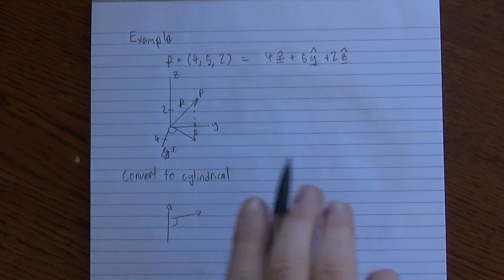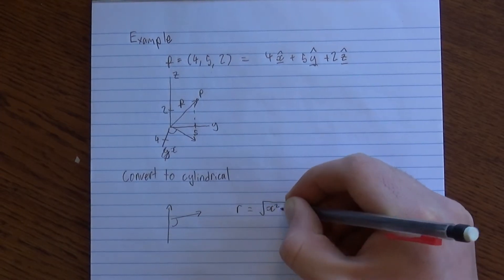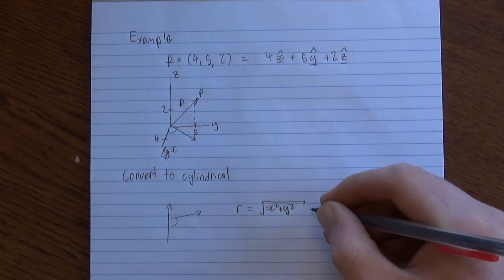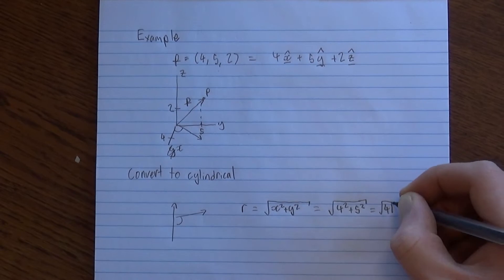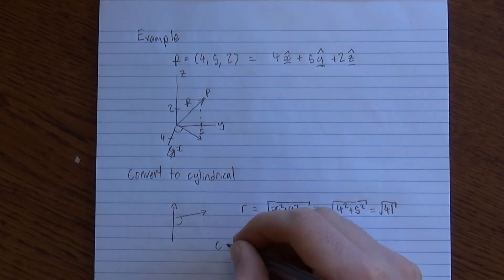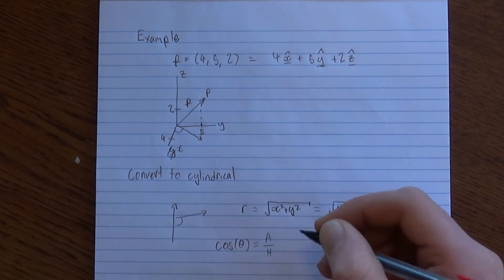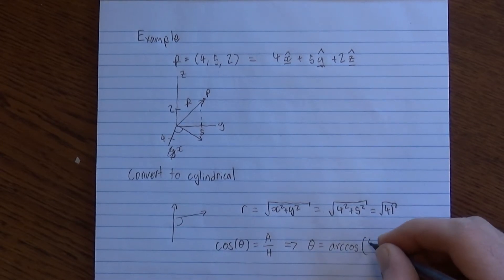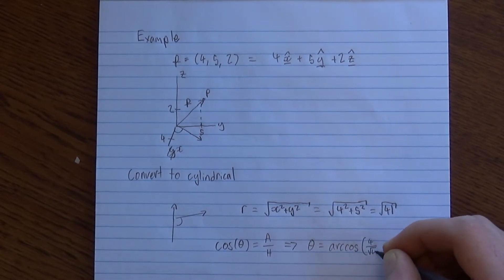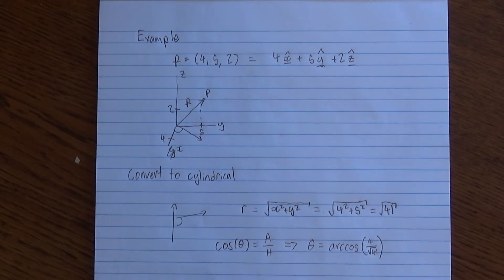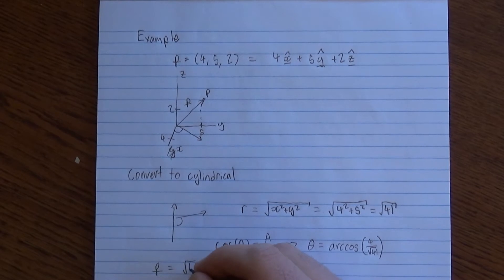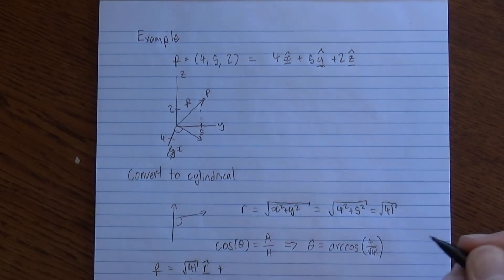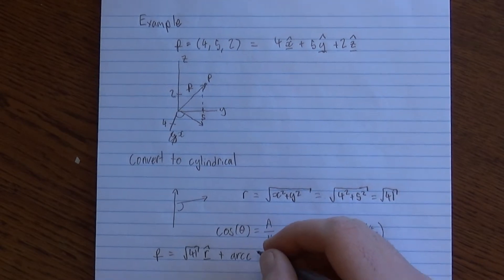And we don't have to do anything with z. So, the square root of x squared plus y squared, which is root 41. For the angle, we have cosine adjacent over hypotenuse. So, theta equals arc cos of 4 over root 41. And our z stays the same.